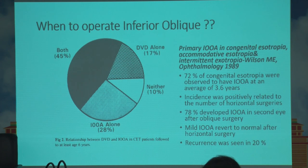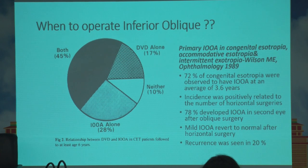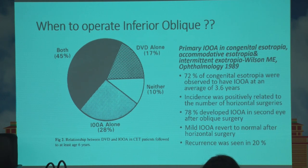The next question is whether to address the inferior oblique at the primary sitting along with horizontal surgery. Studies have shown that DVDs and inferior oblique overactions may develop over five to six years of follow-up — even when operated on only for horizontal surgery during early infancy — in around 72% of congenital esotropia cases. These secondary overactions are usually seen at an average of three to four years of age, and incidence is related to the number of horizontal surgeries. If the inferior oblique was touched in one eye, the other eye may subsequently develop overaction, though mild cases may be corrected by horizontal surgery alone. Recurrence may occur even if we have touched the inferior oblique in the primary setting in 20% of cases.